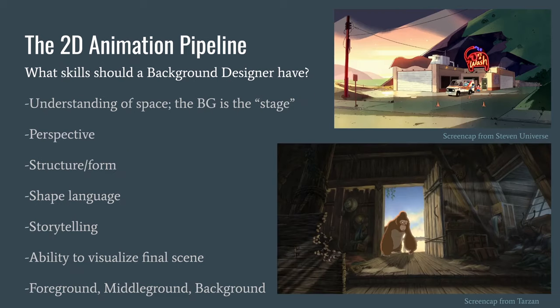The most important skill for a background designer is understanding the space as a stage. Characters and props are the actors — we create a stage for them through perspective, through understanding structure and form so spaces feel solid and real, and through shape language. In this Steven Universe screencap, we've got a big round mountain in the background, a very low square building, and swooping triangular lines from the phone lines — a combination of rounded, square, and triangular shapes.